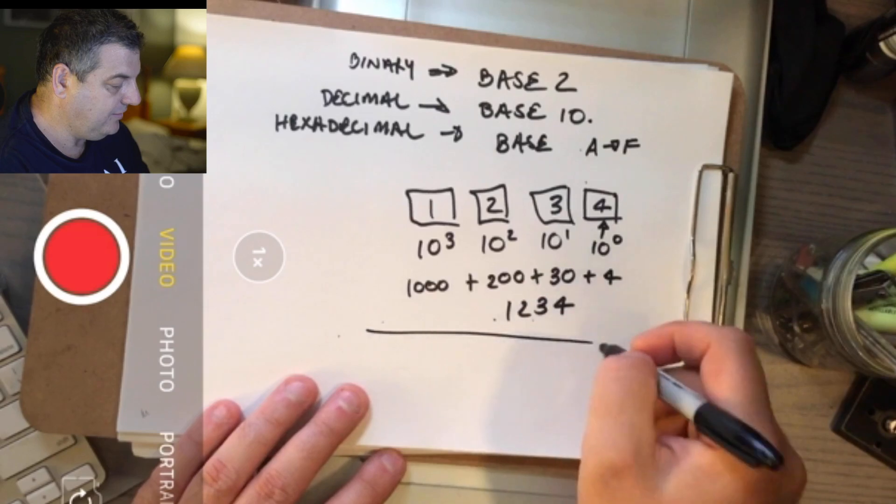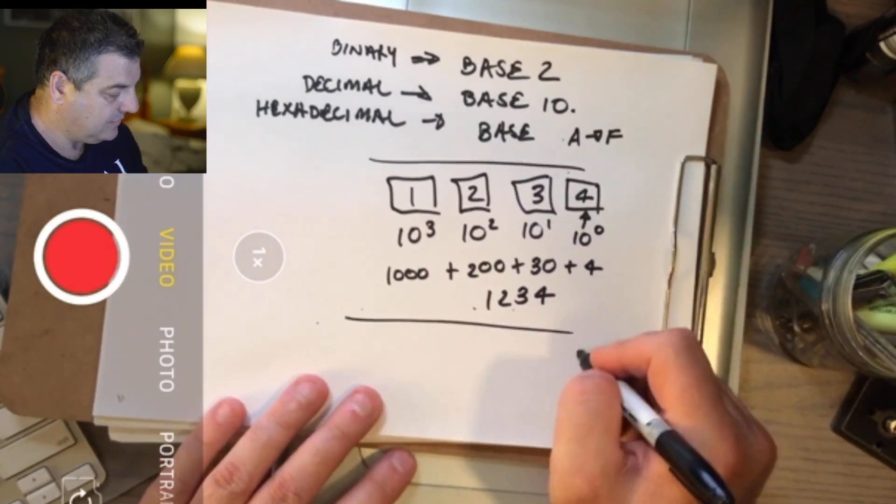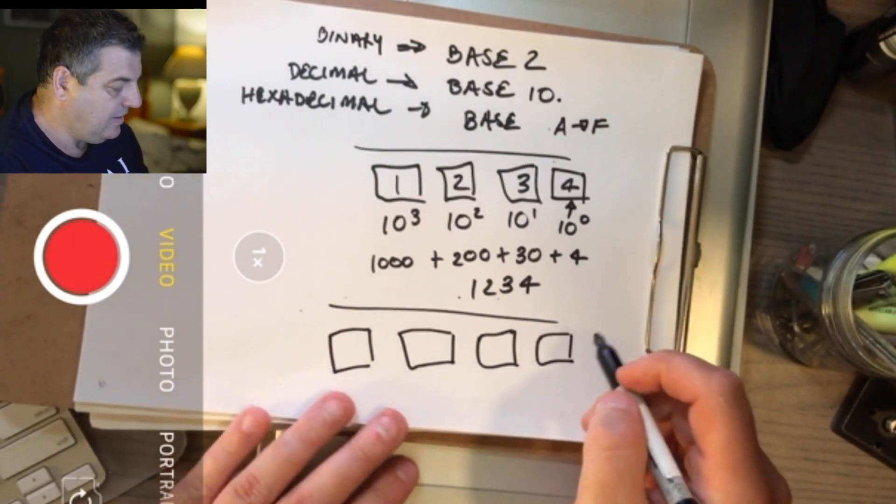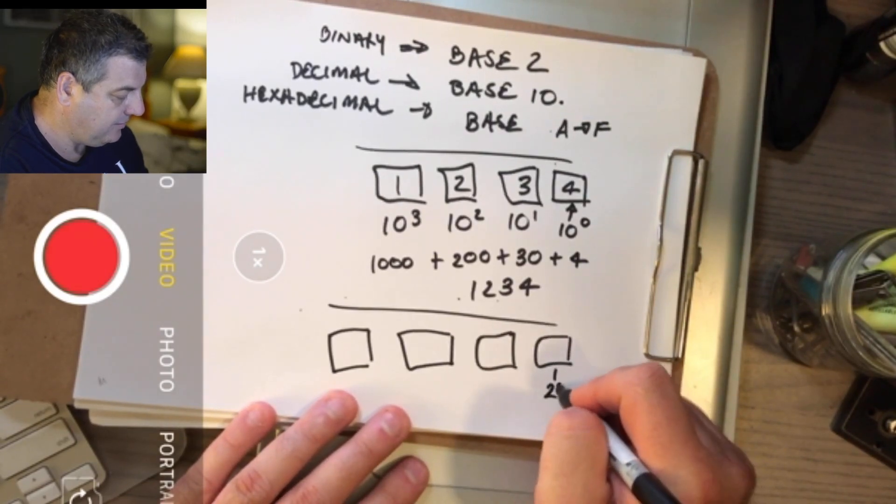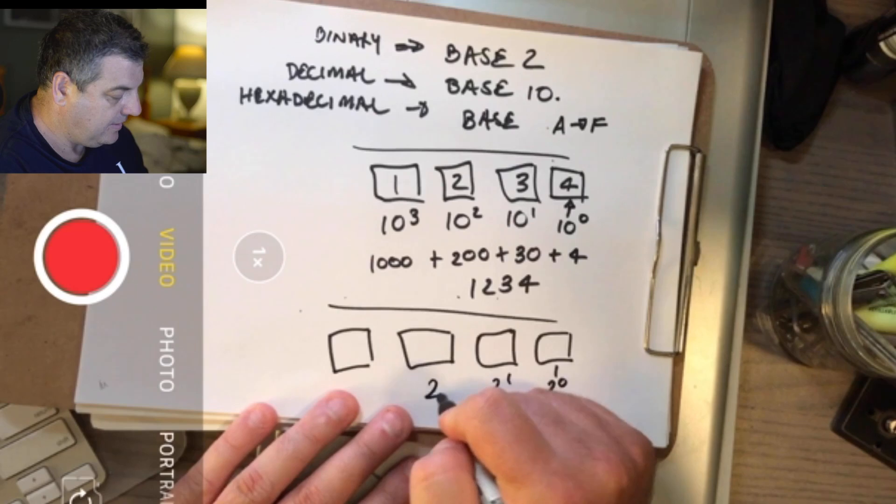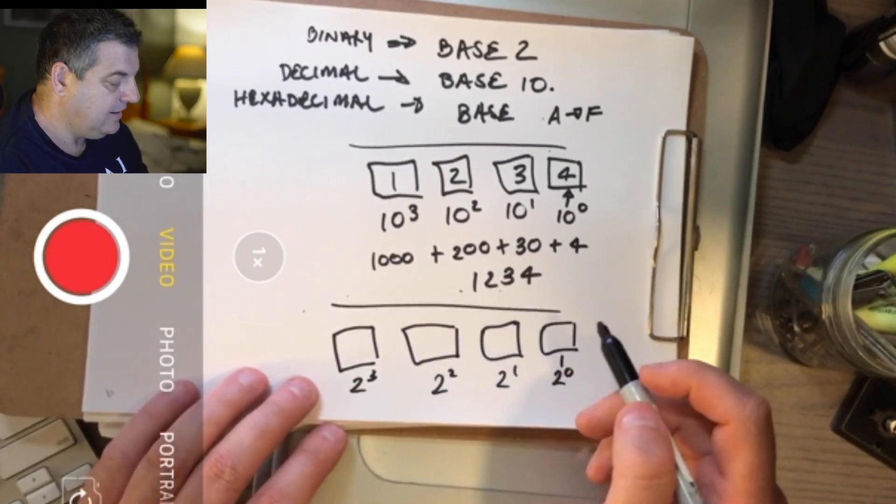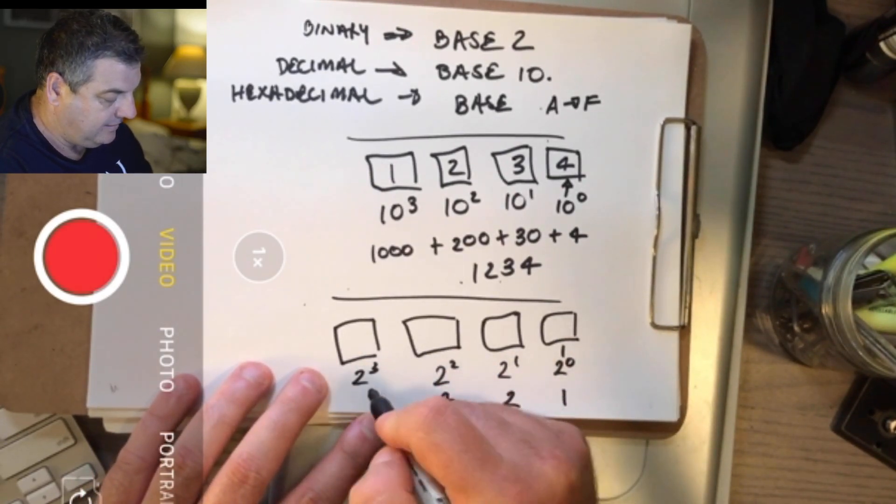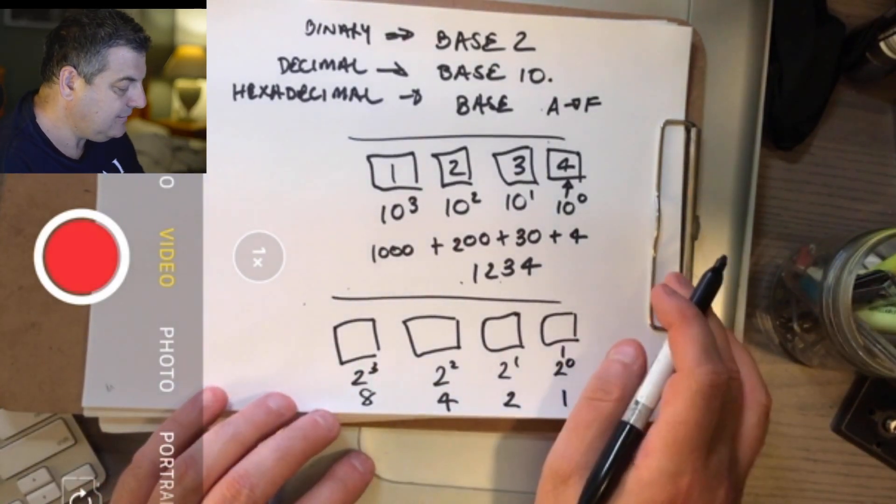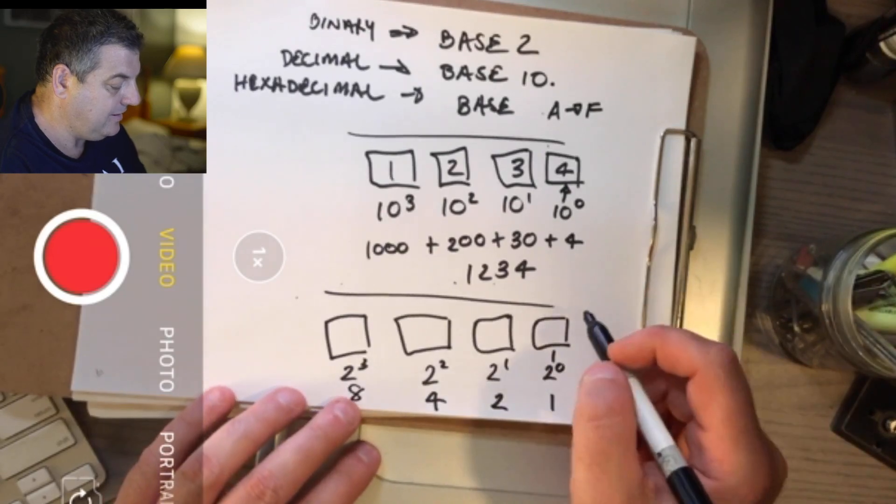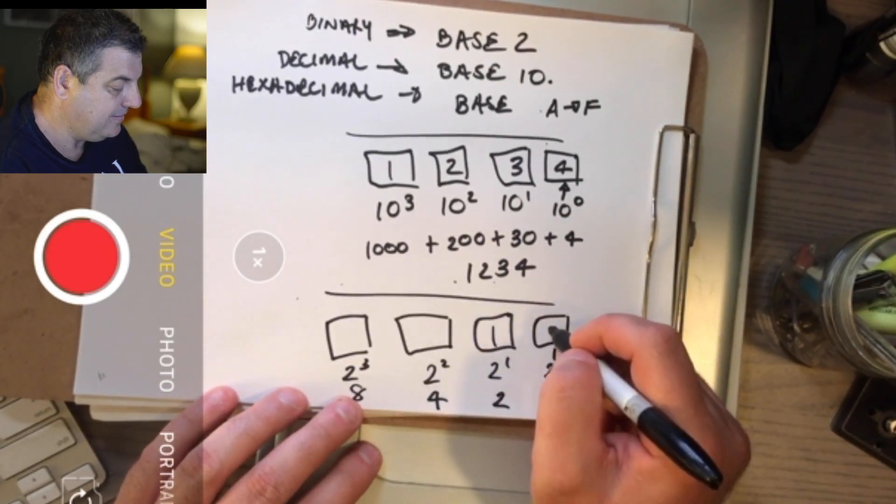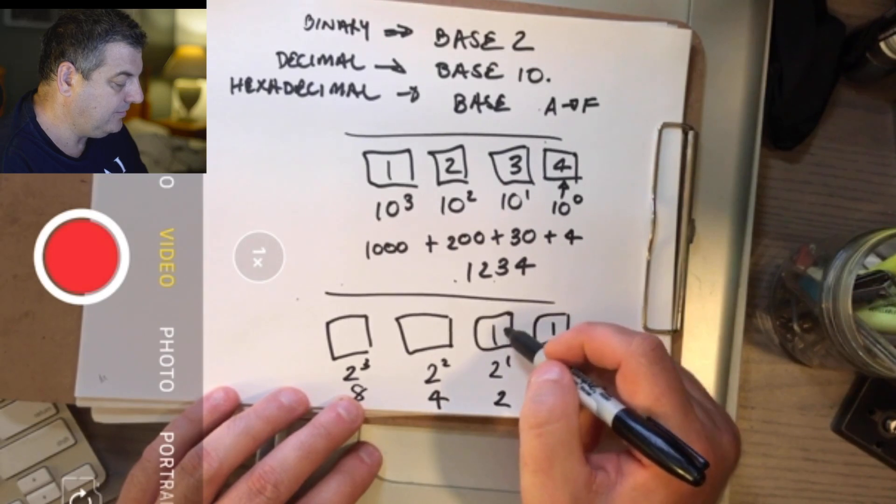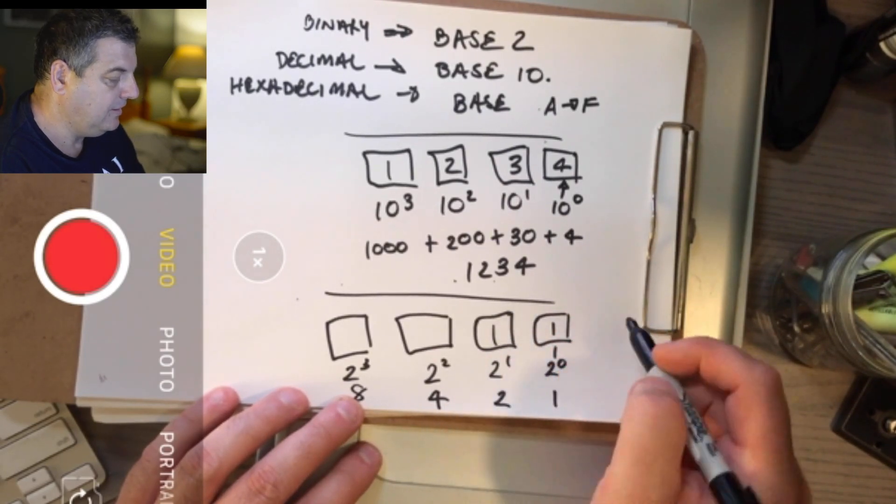Similarly you can do that with the binary system. Instead of a base 10 with the four boxes, you've got a base 2. So logically here you've got 2 to the power of 0, 2 to the power of 1, 2 to the power of 2, 2 to the power of 3. And what that converts to is 1, 2, 4 and 8. With the question what is 1 1 on The Chase, it's really just 1 times 2 to the power of 0 which is 1, plus 1 times 2 to the power of 1 is 2, 2 plus 1 equals 3.